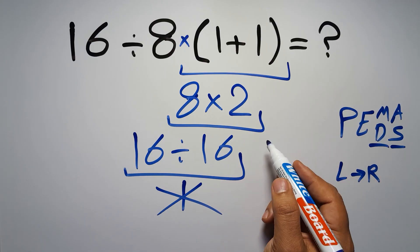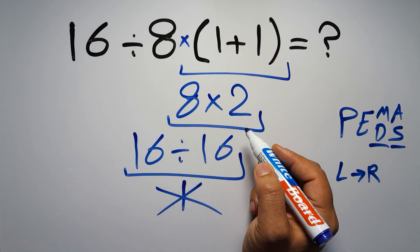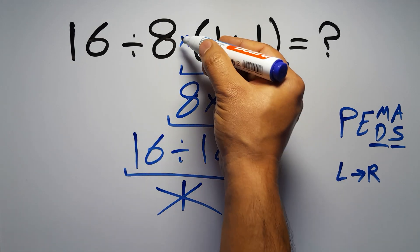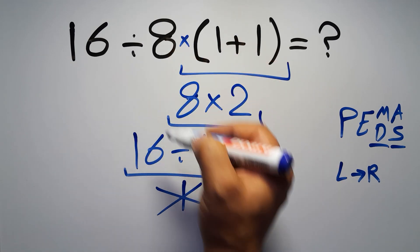So, according to PEMDAS, first we have to do this parentheses, then this division, and finally this multiplication. If we do this multiplication before this division, it is wrong.